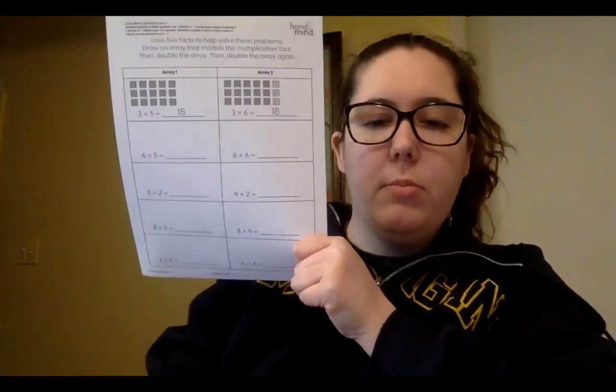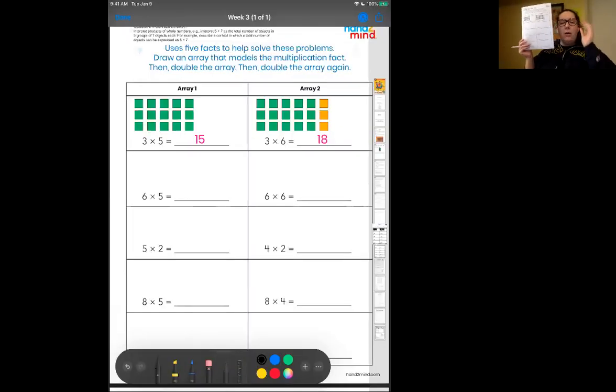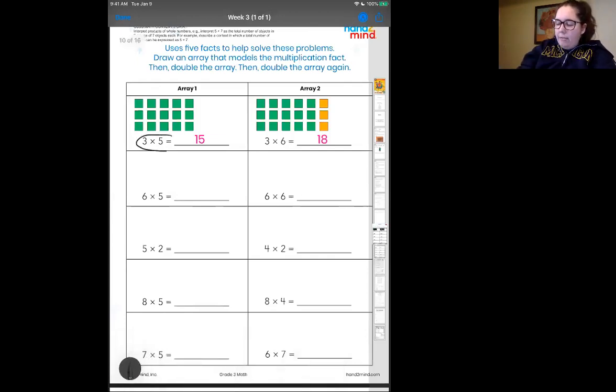So you guys should be awesome pros at arrays, but I'm going to go over them one more time to show you what the sentence means and how it kind of relates to the picture. When you're looking at multiplication sentences, I want you to think about groups of something. So we have three groups of five.